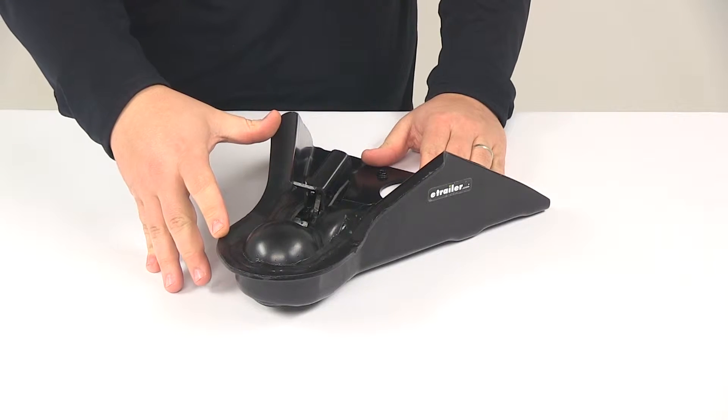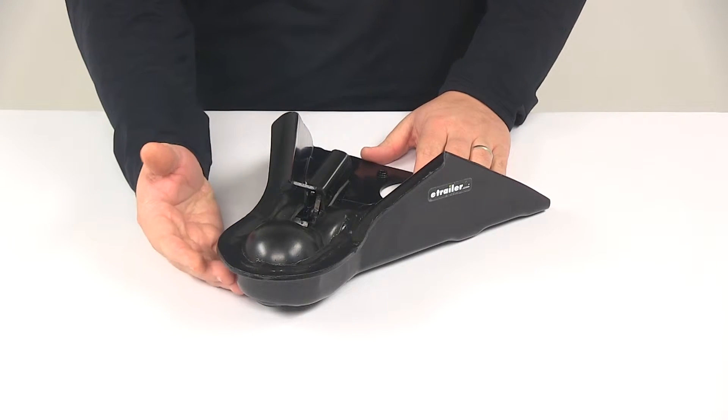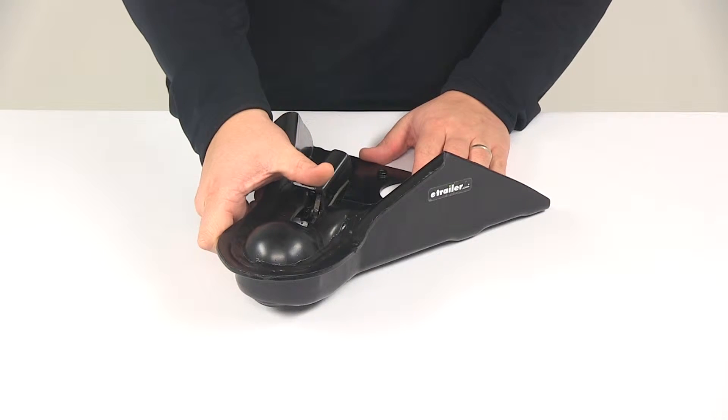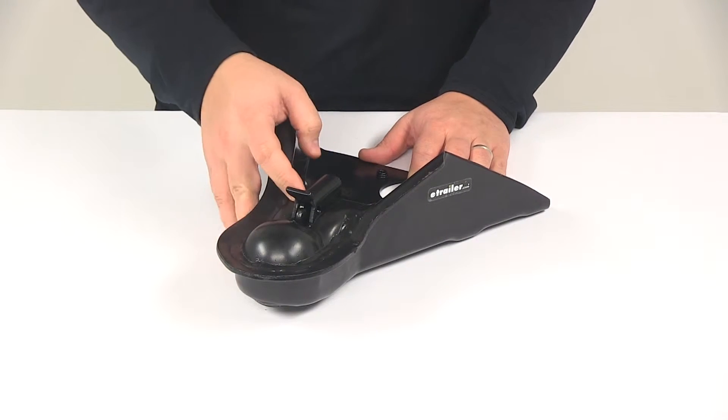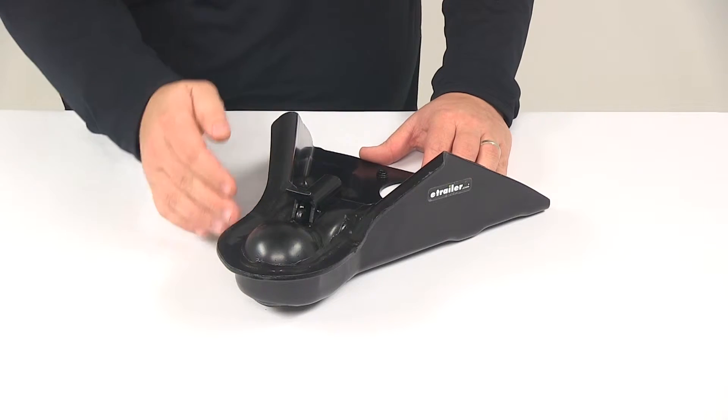This will allow you to connect it to your hitch ball. And then when you're ready to secure the hitch ball, you simply take the thumb latch and push it back down towards the socket area. Make sure it latches into place and then you're connected and ready to go.